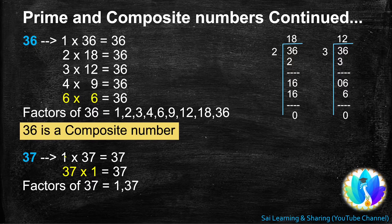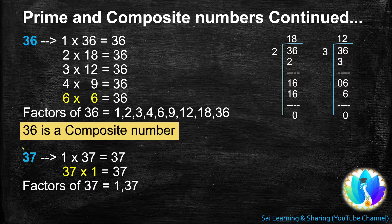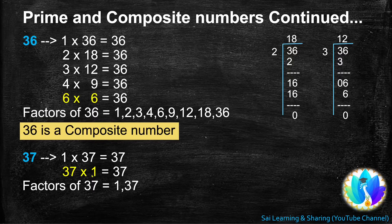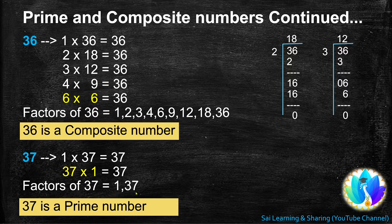Next, 37. 1 is a factor of every number, so 1 times 37 equals 37. 37 is not a multiple of 2 because the ones place is not an even number. At last, we get 37 times 1 equals 37. We got all the factors of 37: 1 and 37. A number with only two factors is a prime number. So 37 is a prime number.